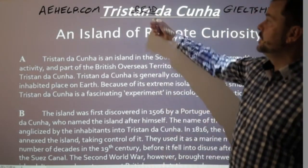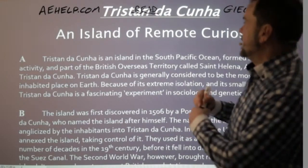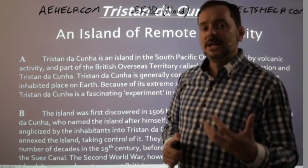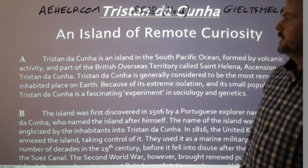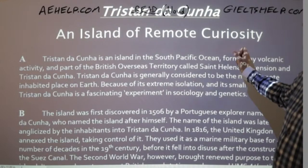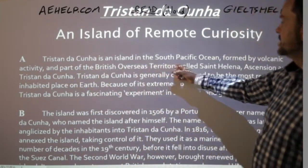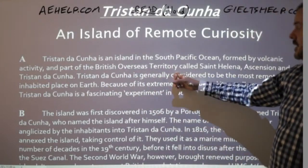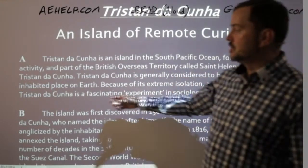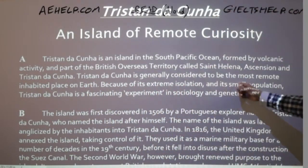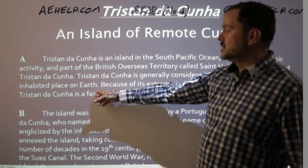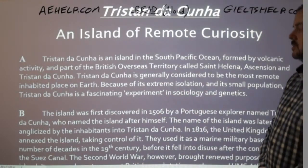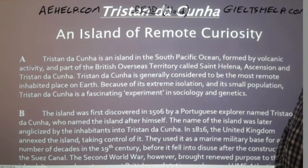Now we're going to read. Make sure to read with me. Whenever you can, practice your reading aloud so you can hear yourself. Here we go. An island of remote curiosity. Tristan da Cunha is an island in the South Atlantic Ocean formed by volcanic activity, and part of the British overseas territory called St. Helena, Ascension, and Tristan da Cunha.